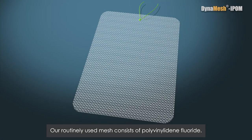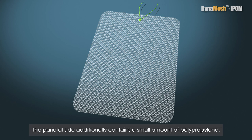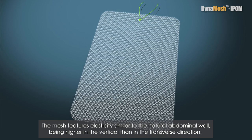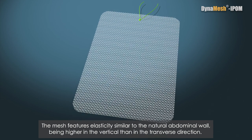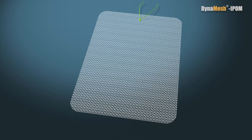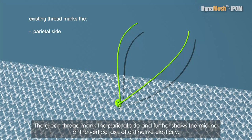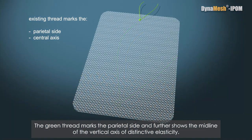Our routinely used mesh consists of polyvinylidene fluoride. The parietal side additionally contains a small amount of polypropylene. The mesh features elasticity similar to the natural abdominal wall, being higher in the vertical than in the transverse direction. The green thread marks the parietal side and further shows the midline of the vertical axis of distinctive elasticity.